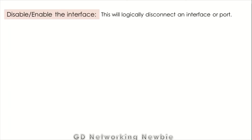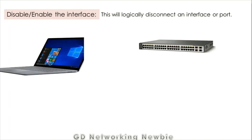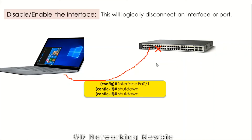We can also enable or disable an interface of a switch, which logically disconnects a port from the network. For example, instead of physically removing a cable, we issue a command to disable that particular port. We navigate to the specific interface and use the shutdown command. With shutdown, we administratively disable or disconnect an interface of the switch.